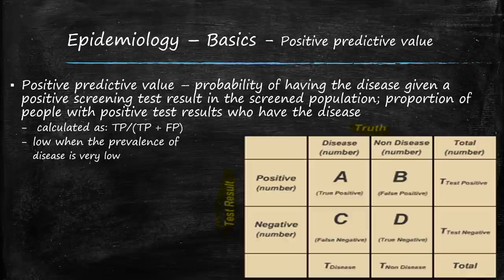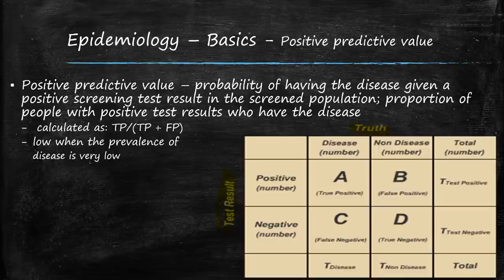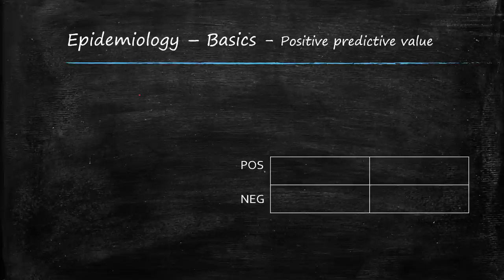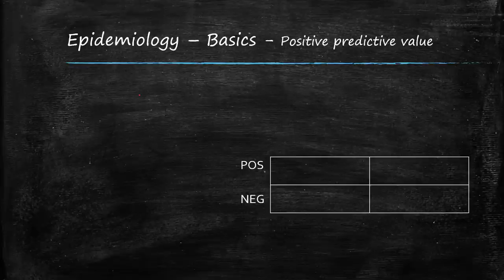Positive predictive value: it's a necessary part of our job to realize that tests are not 100% accurate. The positive predictive value is the probability of having the disease given a positive screening test — the proportion of people with a positive result who actually have the disease. Positive predictive value can be a tricky topic, so you will have to make a judgment based on your experience and time to prepare for the CIC exam. It is my job here to present all of the information to you, and then you can decide how much time to spend on the various topics.